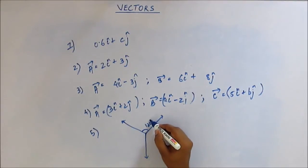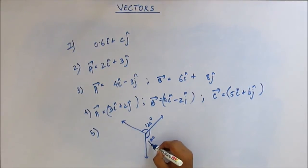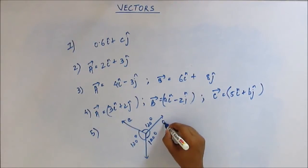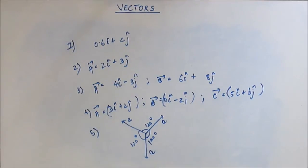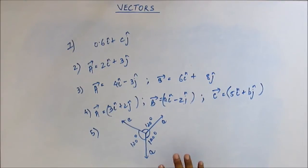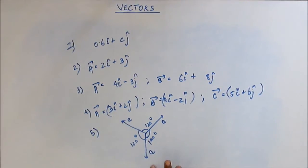Suppose there are 3 forces at 120 degrees with respect to each other, and they all have the same magnitude A. What is the sum of these 3 forces? You have to actually do the mathematics — don't go by feeling. Up until now we have done the addition of 2 vectors; we haven't tried finding the summation of more than 2 vectors. Now I am giving you 3 vectors.